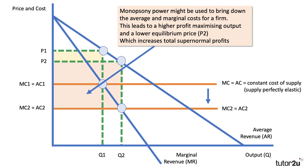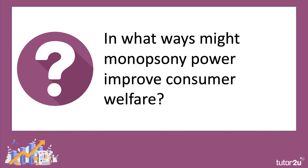The total super normal profit — shown by the shaded orange-pink area — has increased. So monopsony power is a way of increasing the profits of businesses. This kind of analysis diagram would be tremendous to use in an assignment on monopsony.